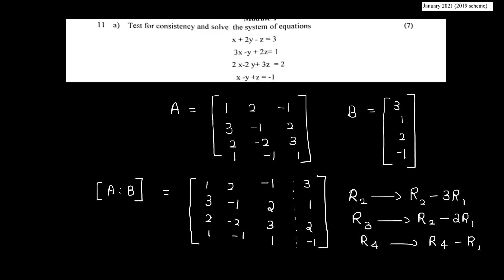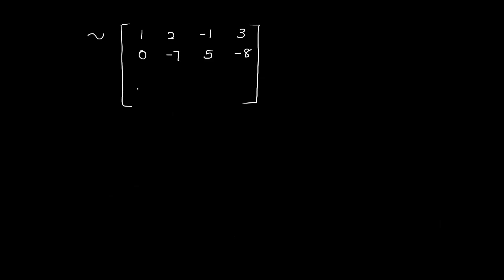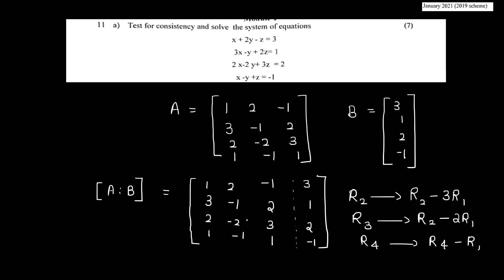Applying R3 minus 2R1: 2 minus 2 equals 0; minus 2 minus 4 equals minus 6; 3 minus 2 equals 1 giving result; and the right-hand side: 2 minus 2 equals 0, then minus 2 minus 4 equals minus 6. Applying R4 minus R1: 0, minus 3, 2, minus 4.